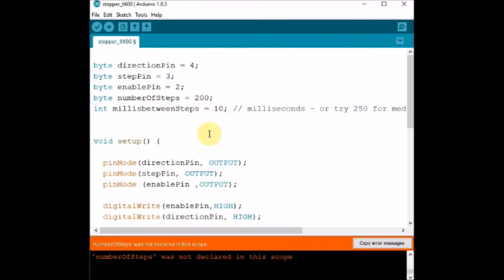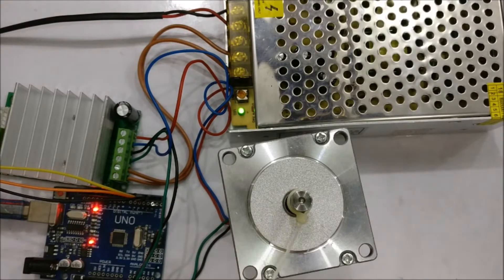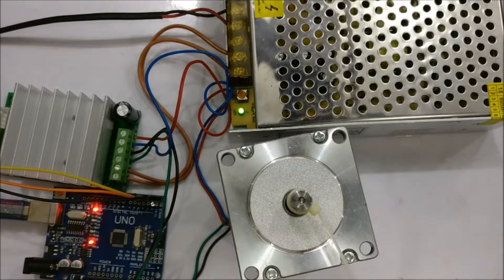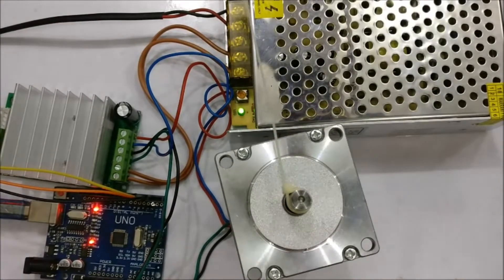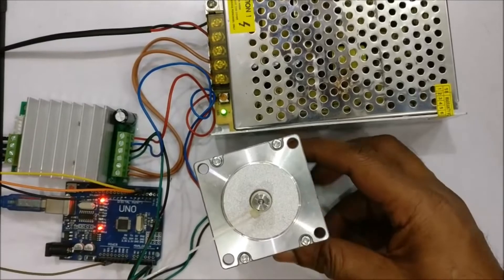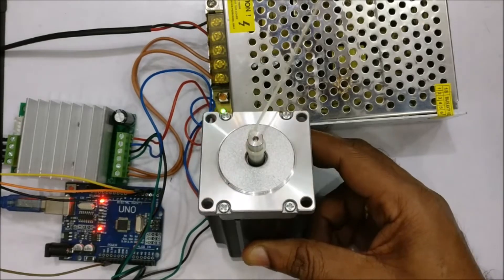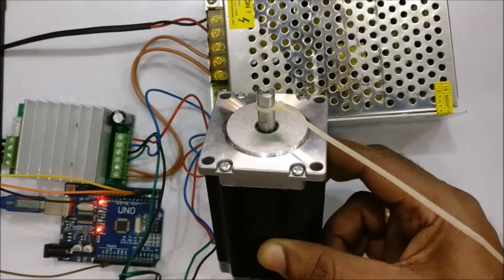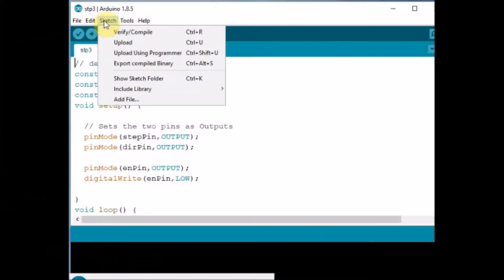To make it slower, you can change the millis between steps to 100 from 10 to 100 and then upload the code. Now you can see the stepper motor moving in small steps. It is moving slower in small steps to complete one rotation. And then after a delay, it makes the reverse counter clockwise rotation. Just by giving the delay and the number of steps, we can move the stepper to any position.